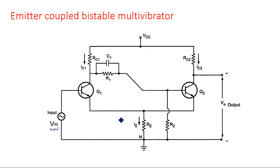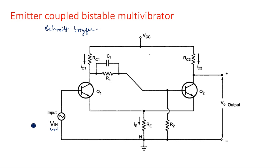In the fixed bias and self-bias types, one transistor's output is connected as the input of the other transistor and vice versa, so the signal is generated within that positive feedback loop. But in the emitter coupled bistable multivibrator, known as the Schmitt trigger, we apply an external input waveform — for example, a sinusoidal signal at the base of transistor Q1.